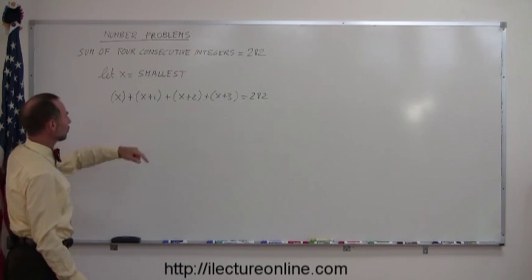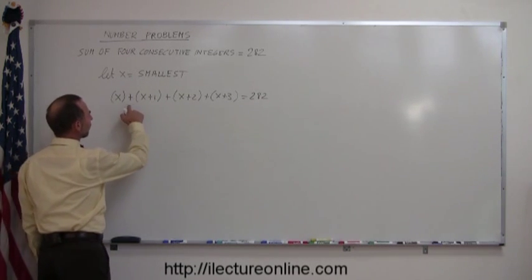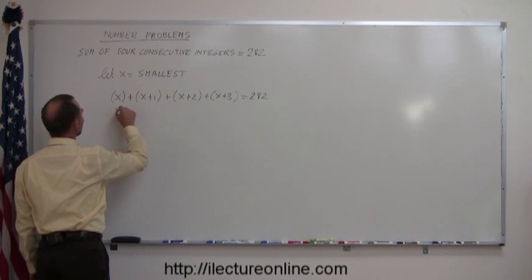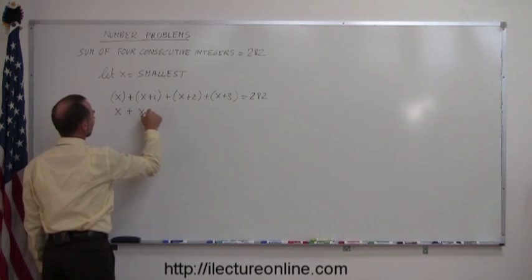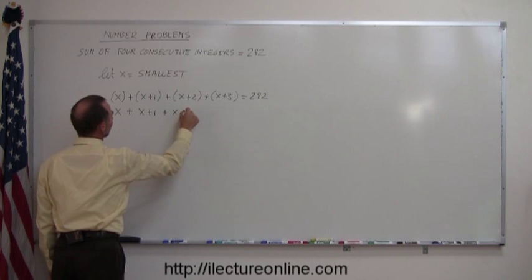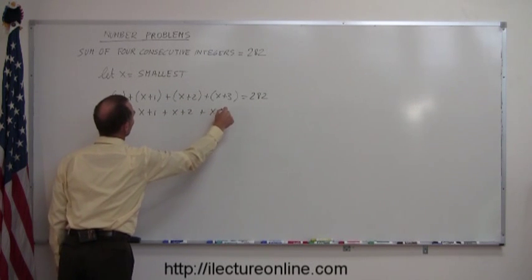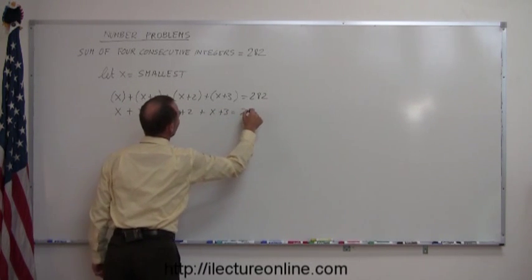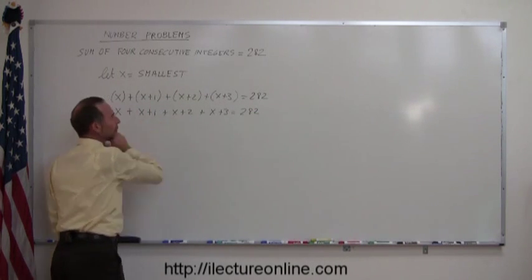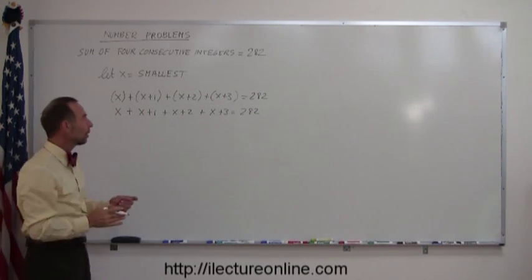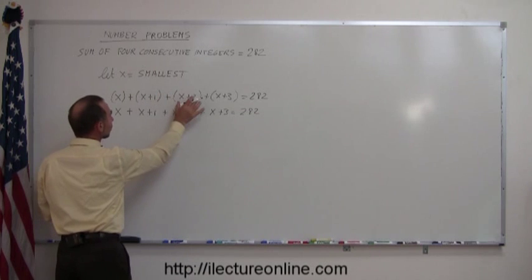First of all, I need to drop all the parentheses, since I have nothing but additions, we can simply take those off. So this is x plus x plus one plus x plus two plus x plus three equals 282. So the reason why I put the parentheses on there is just to show you that I'm adding four consecutive integers.